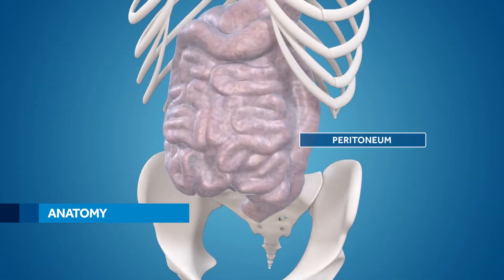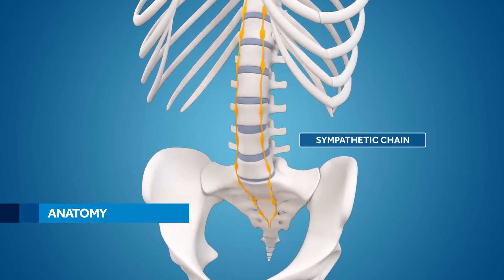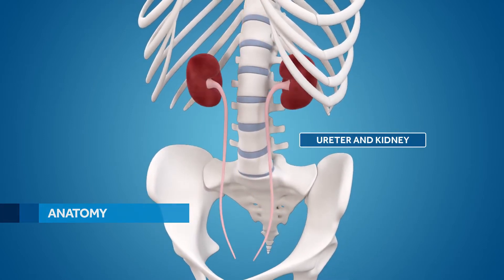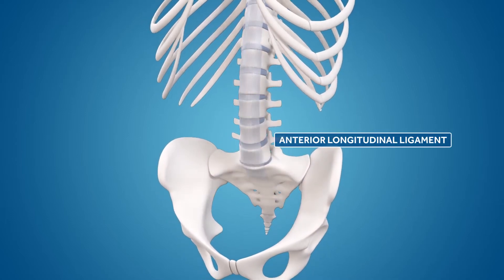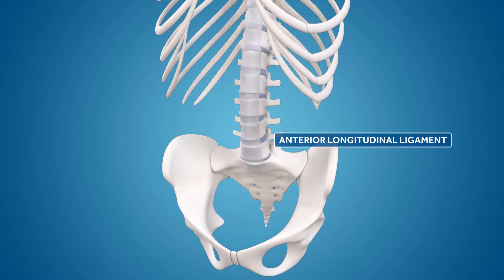Specifically the peritoneum, the psoas muscle, the sympathetic chain, the ureter and kidney, the lumbar plexus, the vasculature in the lumbar region, and the anterior longitudinal ligament, or ALL.